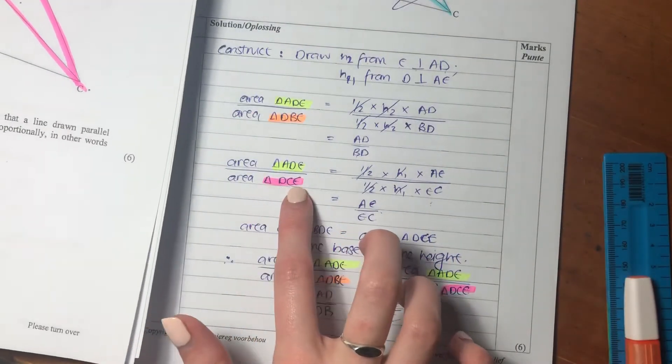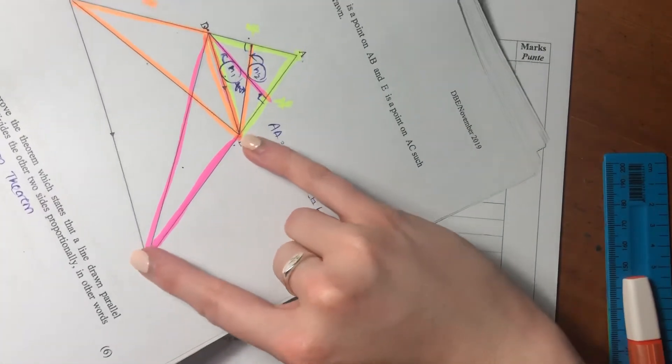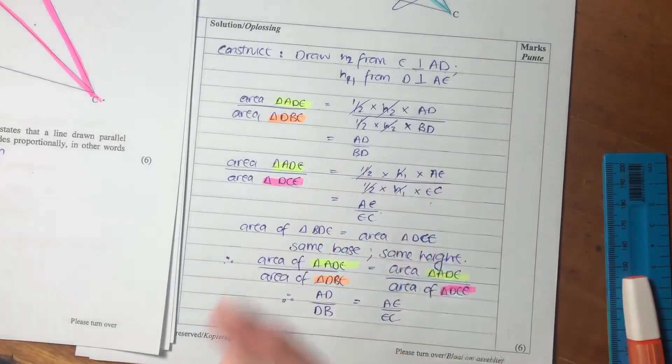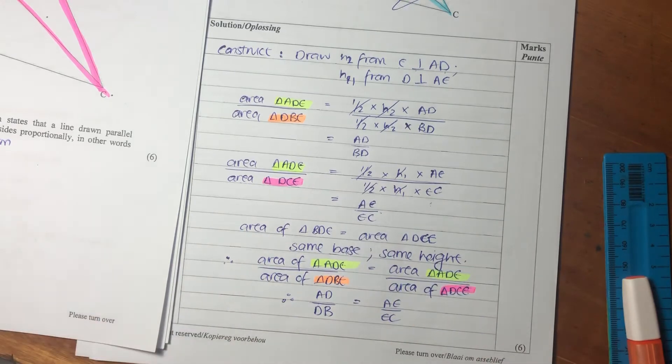Then for DCE, we use EC as our base, and H1 as our height. So we put that in, again, we can cancel, and we're left with AE over EC.